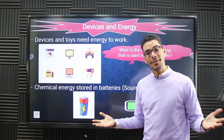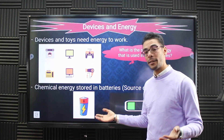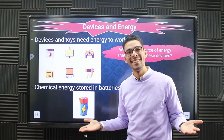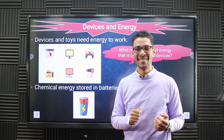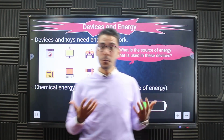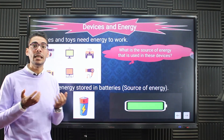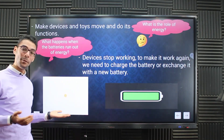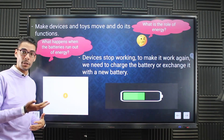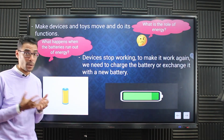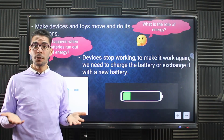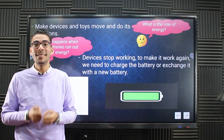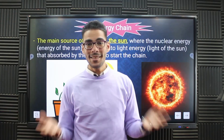If we talk about a battery, the input energy is different — it's chemical energy. The energy produced from the battery is electric energy. We have two types of batteries: rechargeable batteries, which can be recharged when the energy inside runs out, and non-rechargeable batteries, which are replaced by another one when the energy inside is finished.